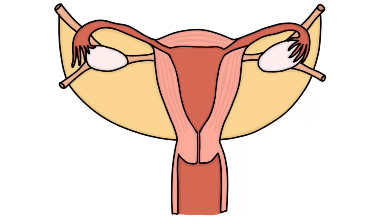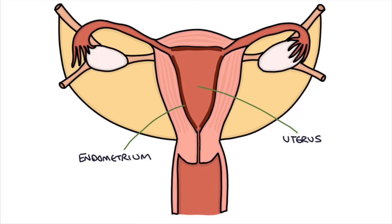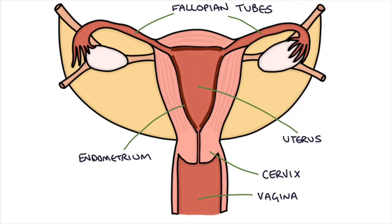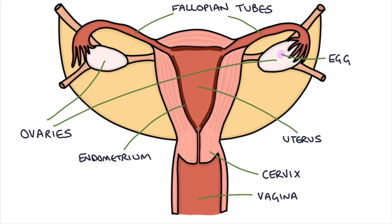Before we go any further, I just want to go through some basic anatomy of the pelvis. Here's a front-on view of what you might see in the pelvis. You'd have the uterus, which is this structure in the middle where babies grow. The lining of the uterus is called the endometrium — this red area in the middle — and this is what breaks down and gets released and bleeds during menstruation. Attached to the uterus you've got the cervix, the entrance to the vagina, the fallopian tubes, and the ovaries, which produce the eggs. The eggs move down the fallopian tube to the uterus where fertilization takes place and you get a pregnancy.